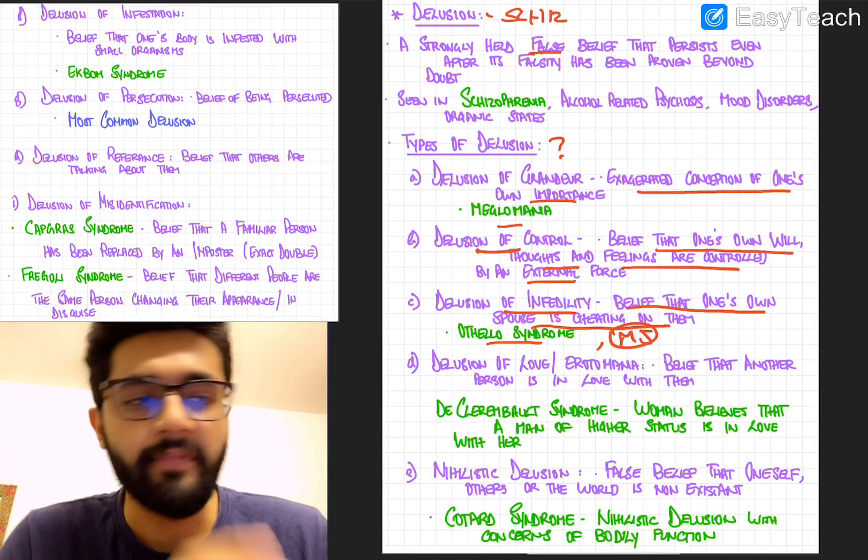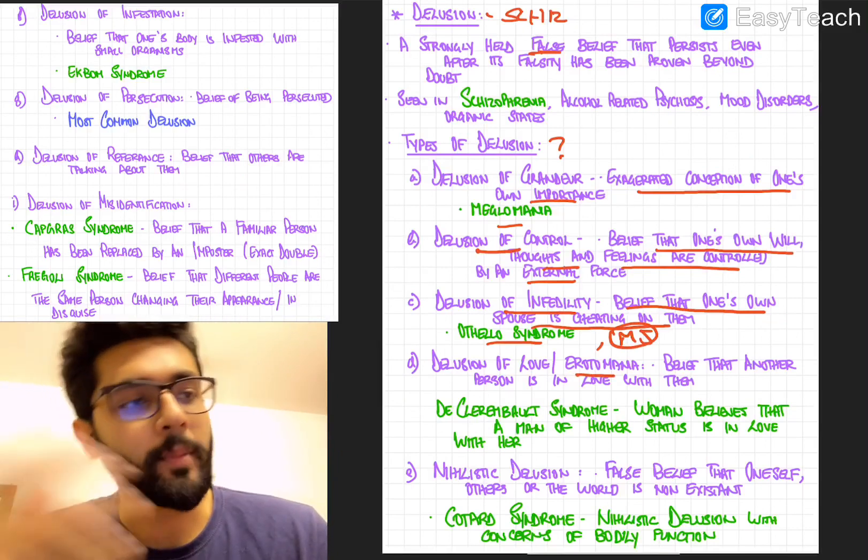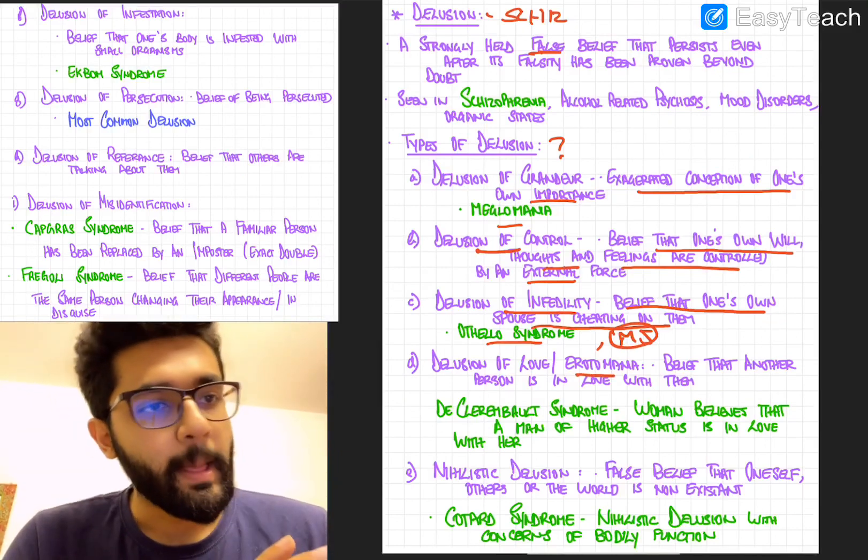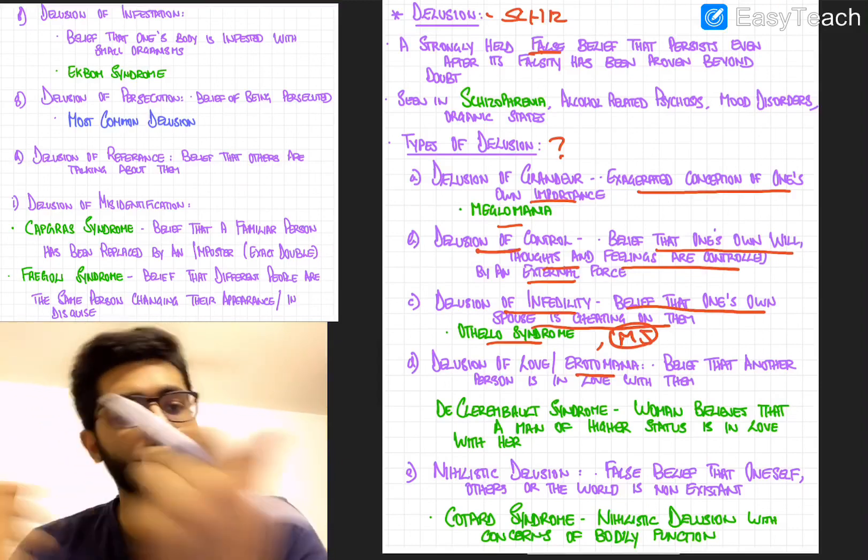Next, you have the delusion of love, or also called erotomania. And it is a belief that another person is in love with them.